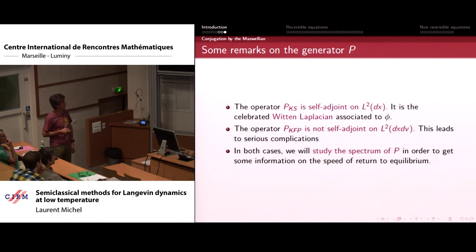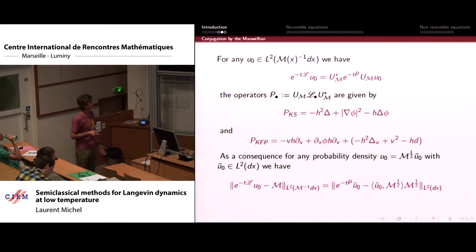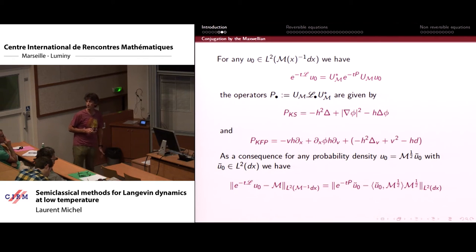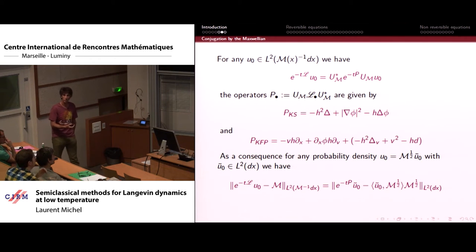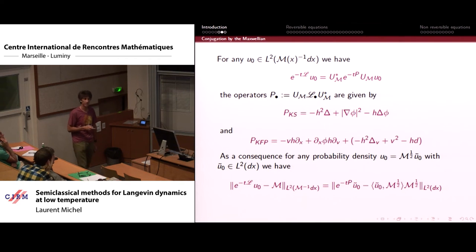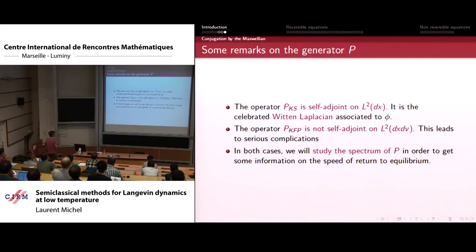In both cases, we try to study the spectrum of P in order to get some information on the speed of return to equilibrium. The Witten Laplacian Delta_phi is non-negative, which is not obvious from its expression because of the minus h times Delta phi term. It is essentially self-adjoint on compactly supported smooth functions. Thanks to our assumptions — the second derivative of phi is controlled by the gradient phi, and the gradient phi is bounded from below — the essential spectrum of the operator is away from zero, independently of h.